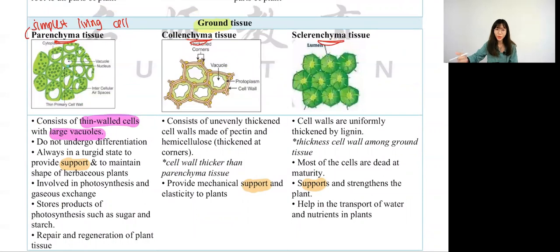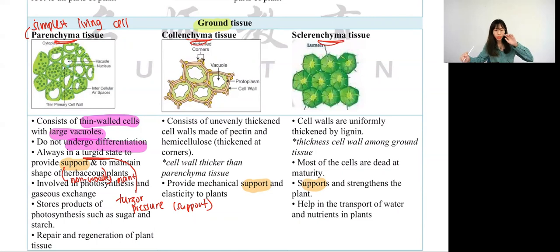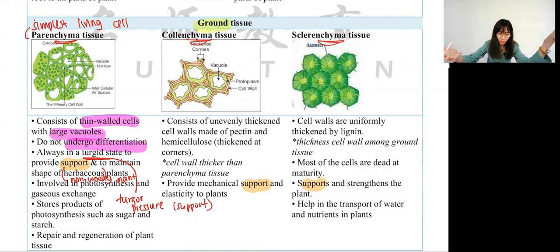Parenchyma cells are able to always maintain a turgid state. Turgid means they are able to provide a pressure called turgor pressure. Turgor pressure is to provide support to herbaceous plants — herbaceous plants are known as non-woody plants. Parenchyma tissue provides support to non-woody plants through turgor pressure: water diffuses into the vacuole and creates turgor pressure. This is what we learned in Form 4 Chapter 3 on osmosis. They are also able to store photosynthetic products such as sugar and starch.